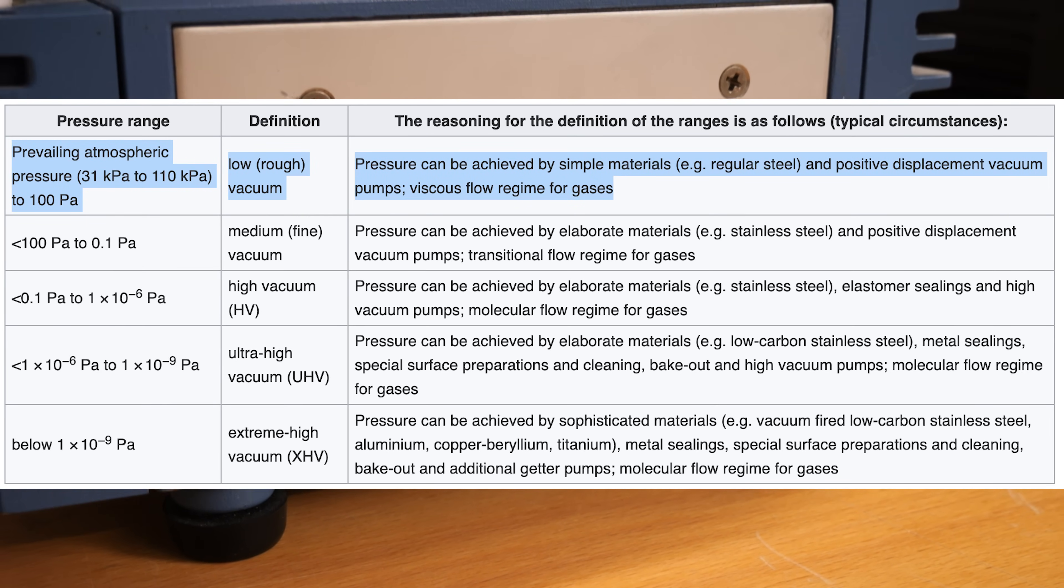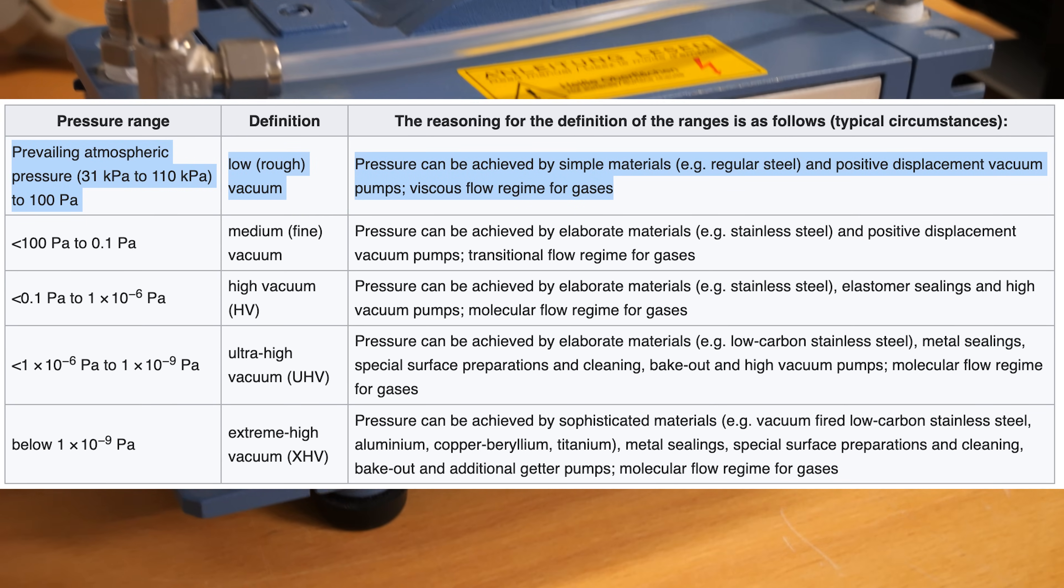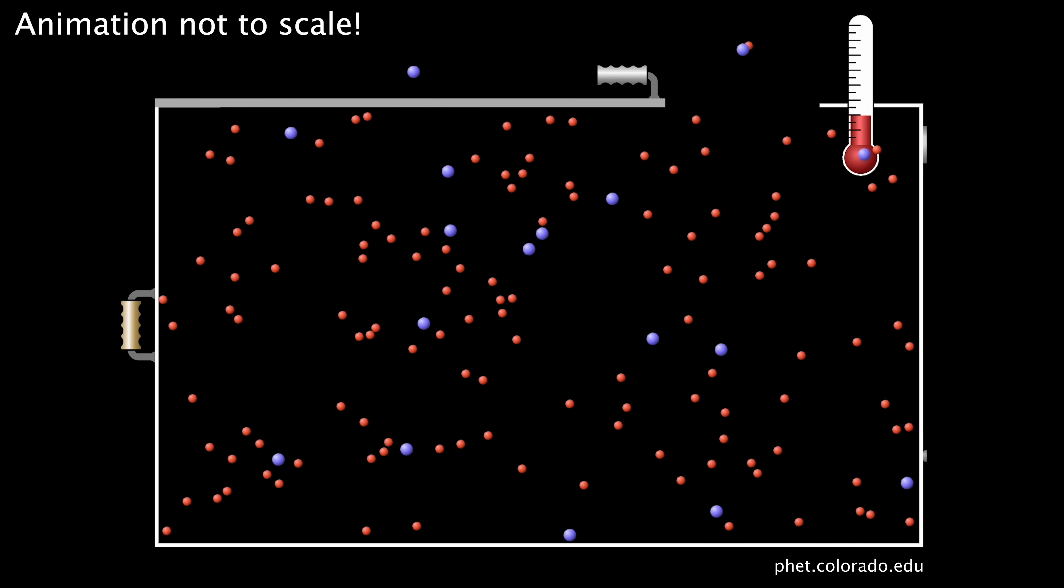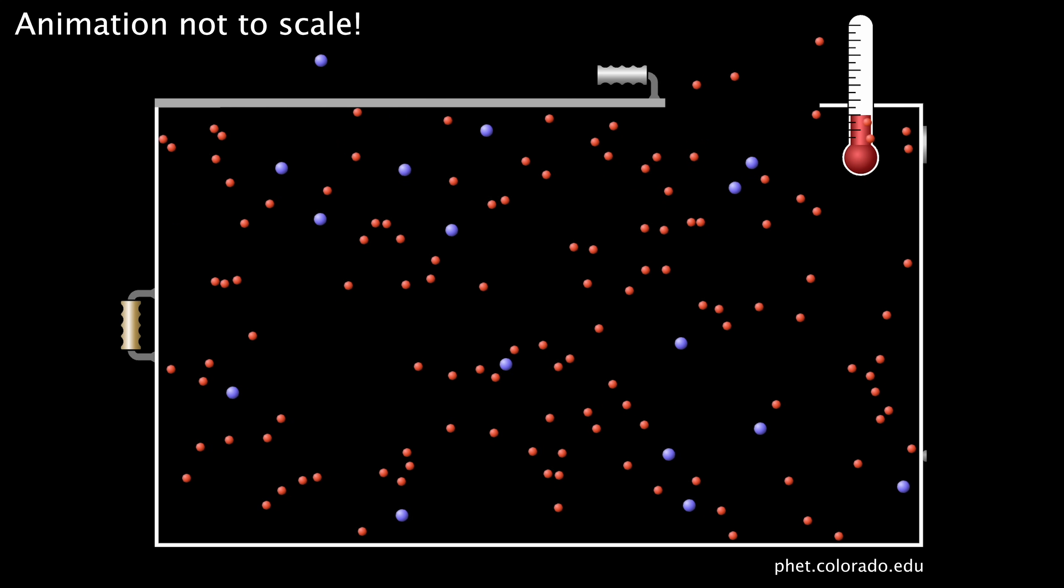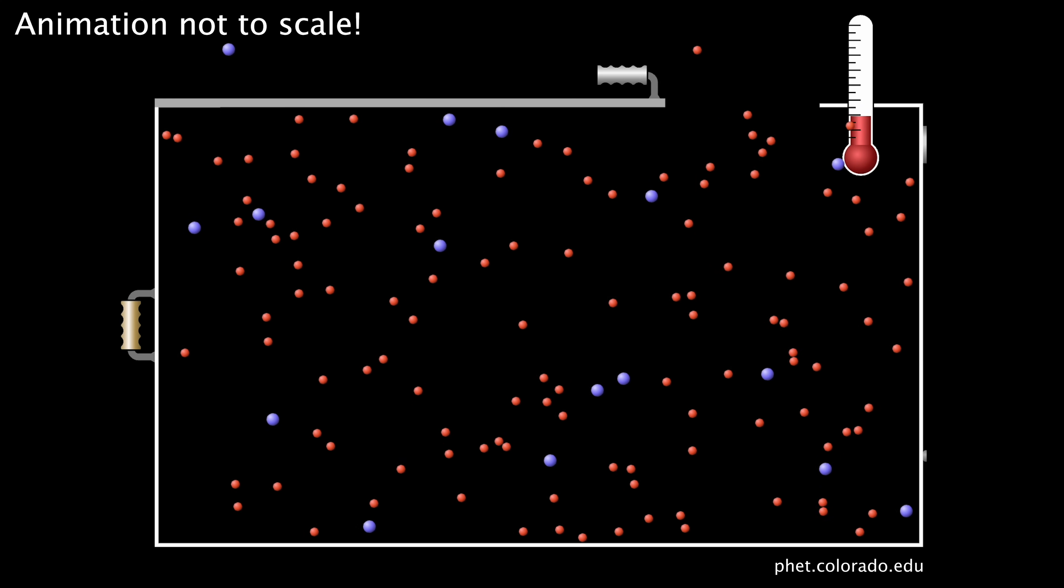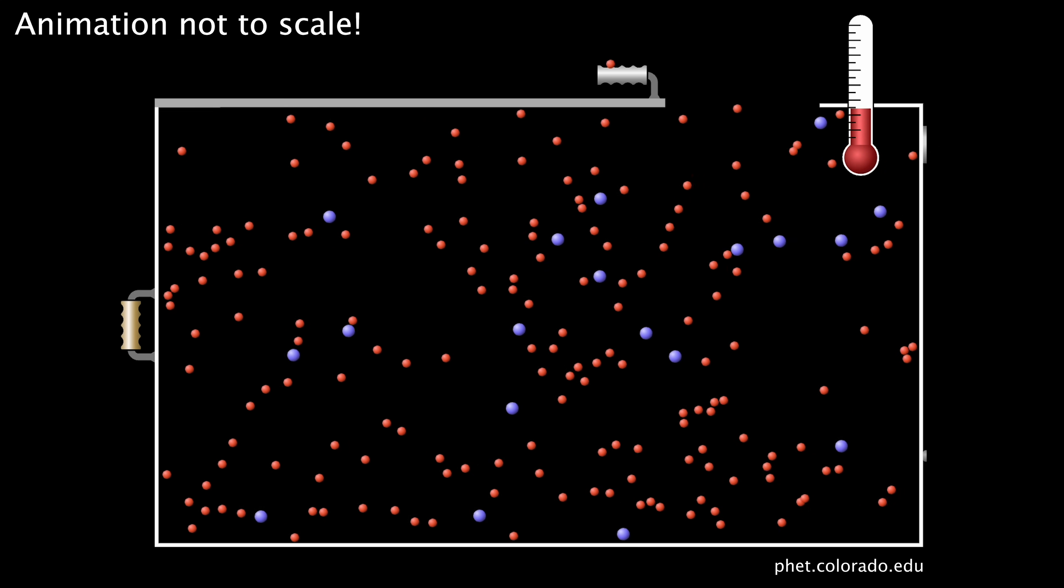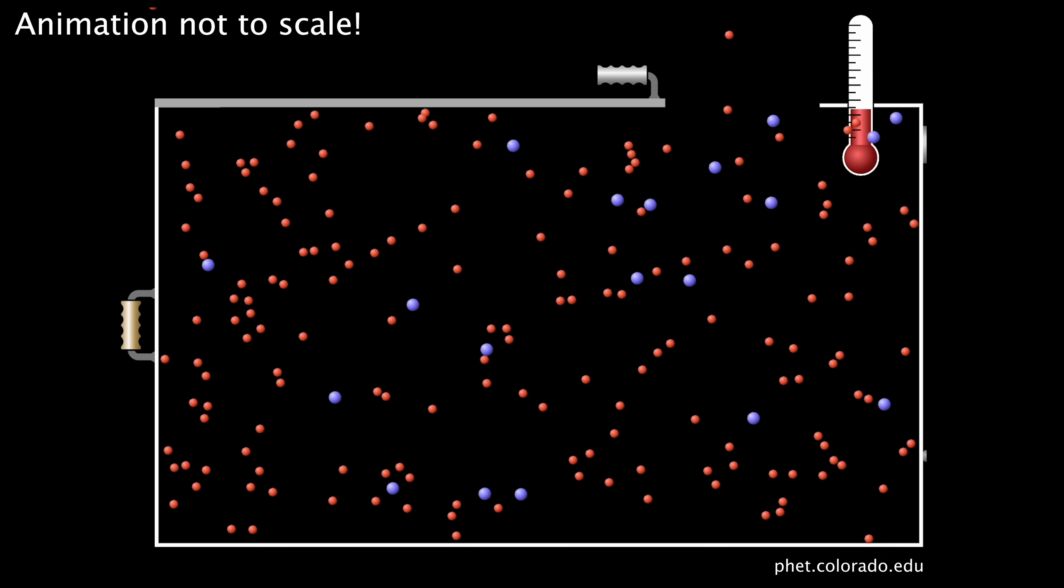At a pressure of 0.5 millibar, the mean free path, which is the distance a gas particle can travel before colliding with another particle, is approximately 140 micrometers. By comparison, at atmospheric pressure, the distance is only about 70 nanometers, equivalent to the size of a small virus particle.